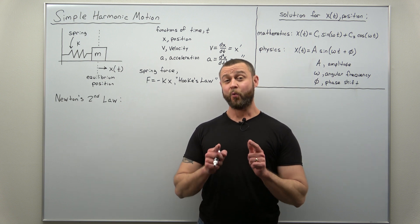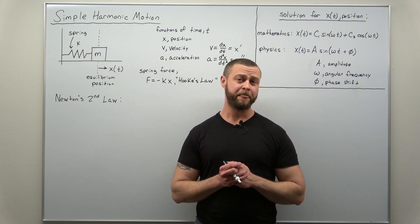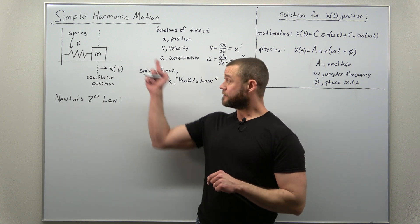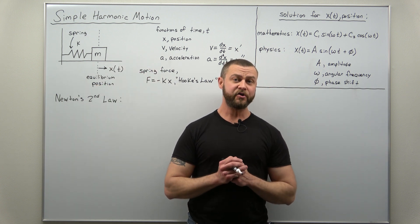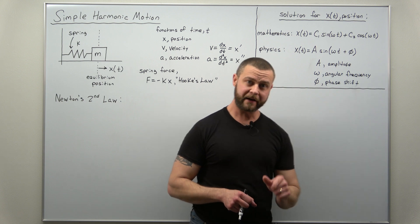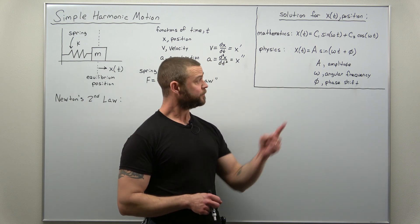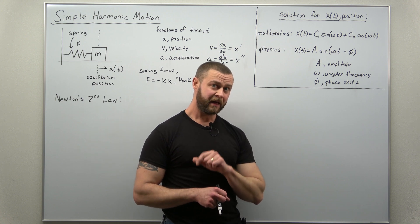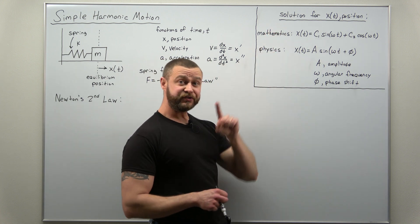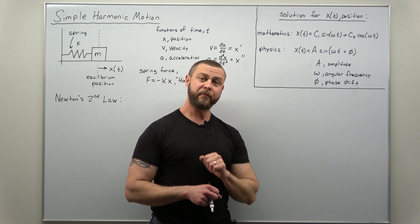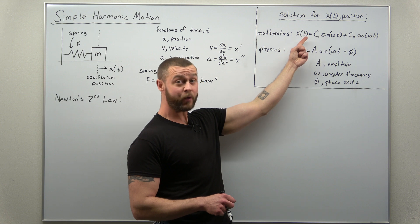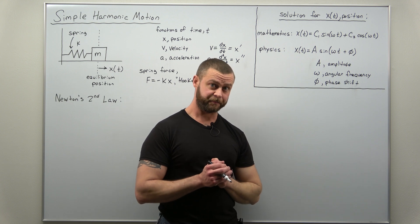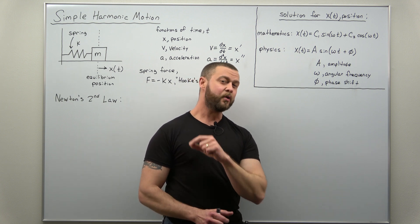Greetings fellow mathematicians. We're going to take a look at the problem of simple harmonic motion from the point of view of differential equations. Our goal for this video will be two parts: we're going to convert this into a differential equation and then solve it, finding that the solution for position x as a function of time is a combination of sine and cosine. Our second goal is to reconcile these two different-looking solutions using Euler's formula.